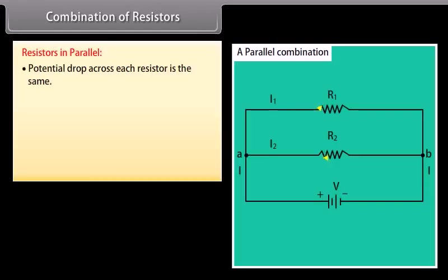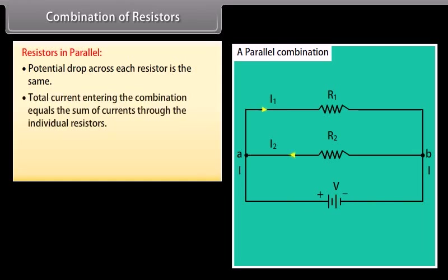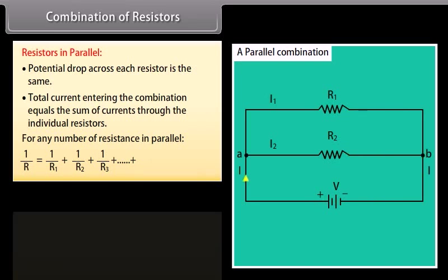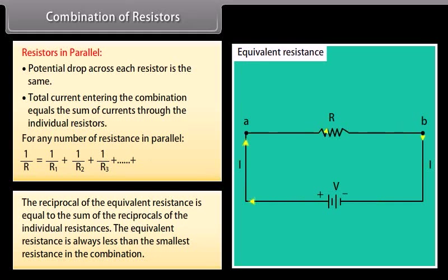In a parallel combination, the potential drop across each resistor is the same. The total current entering the combination equals the sum of currents through individual resistors. For any number of resistances in parallel: 1/R = 1/R₁ + 1/R₂ + 1/R₃ + … The equivalent resistance is always less than the smallest resistance in the combination.